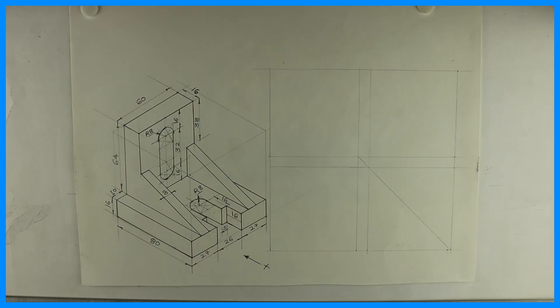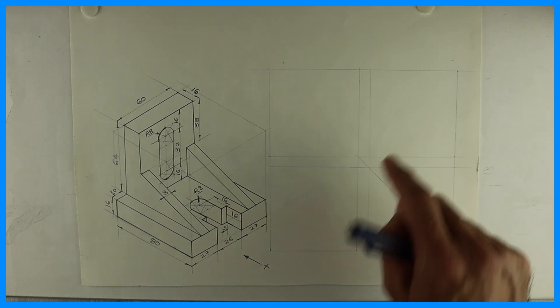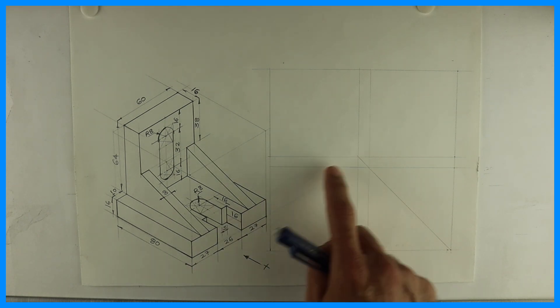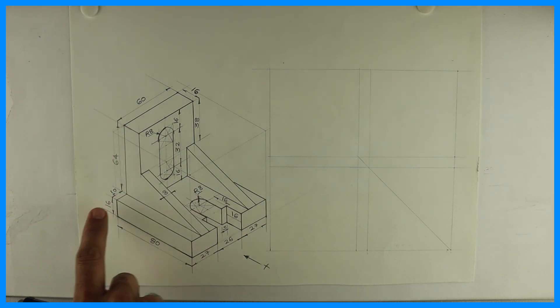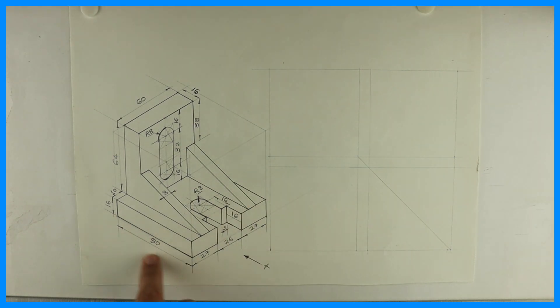Welcome to technical drawing. Today we are going to solve this problem in sectional orthography. First we will draw front view, top view, and side view. Let's say the observer is seeing from this direction.